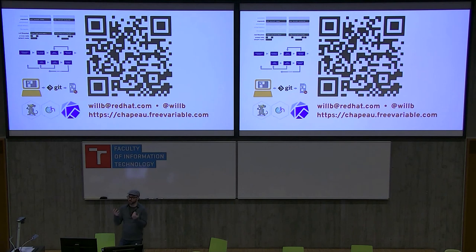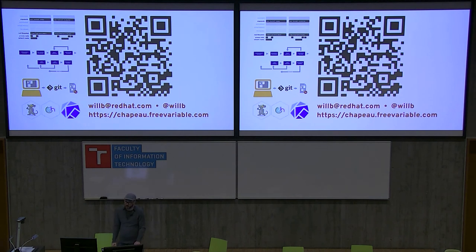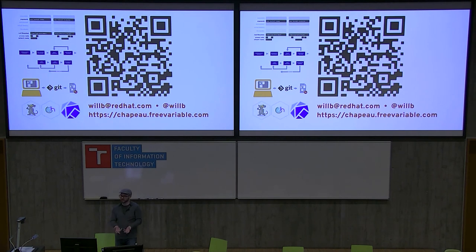Question: With container images you have reproducible research because you always have an immutable image, but what if you're depending on data coming from outside the container image? There are a few solutions. There's a cool open-source project called Pachyderm that provides a versioned data store so you can refer to something by a hash and know you're getting a particular version of a particular data set. There's also a project called Quilt for managing and versioning data sets. For small data, you can certainly bake it into the container image as well.